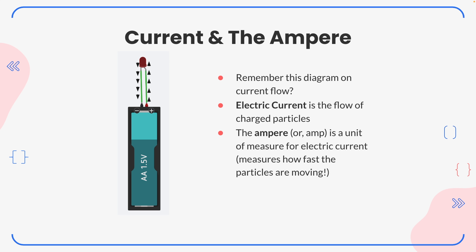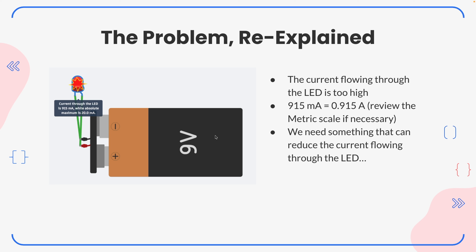The amp measures how fast those charged particles are moving. So we have current flowing through the LED and a way of measuring how fast that current is flowing, which is the amp. The current through the LED is too high — 915 milliamps equals 0.915 amps. If you're shaky on the metric scale, a quick Google search will show you how that conversion works.